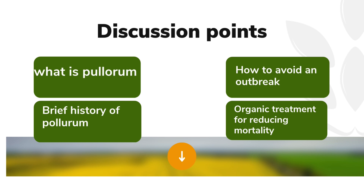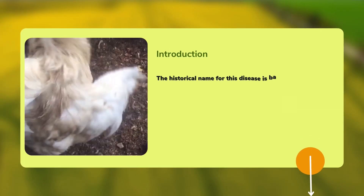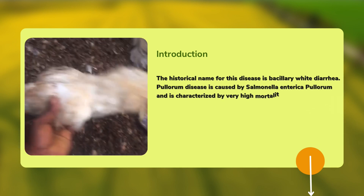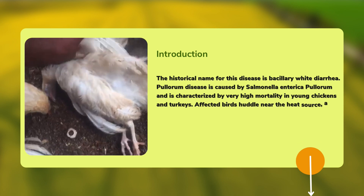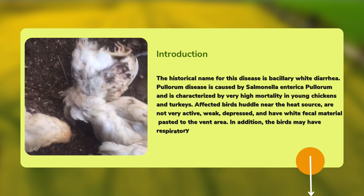To help us do justice to this, we will take a few discussion points: what is pullorum, a brief history of pullorum, how to avoid an outbreak, and lastly, organic treatment for reducing mortality. Salmonella pullorum and salmonella gallinarum are especially adapted to poultry. They cause diseases known as pullorum disease and fowl typhoid, and both mainly affect chickens and turkeys.